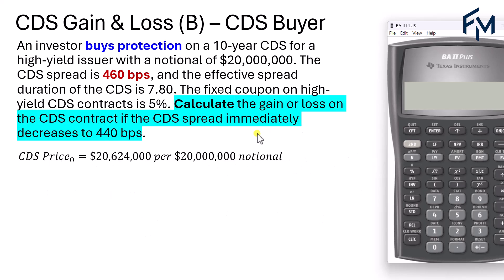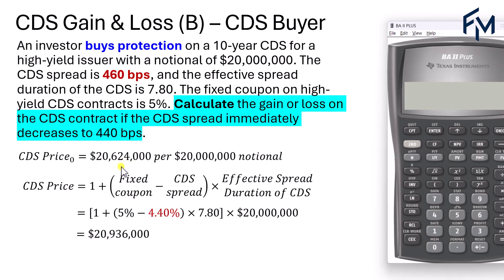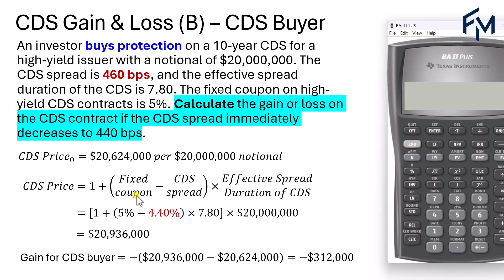Now, what if the spread dropped to 440 basis points? Using the same approach, we substitute the CDS spread of 4.4% and find the price has actually gone up. When the CDS price goes up, it's a gain for the long position. But the investor is buying protection — a short position — so the short position loses. Taking the difference in price and multiplying by a negative sign for the short position gives negative $312,000, a mark-to-market loss for the CDS buyer.